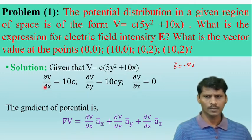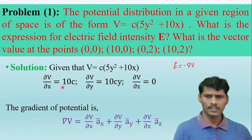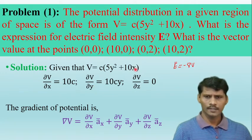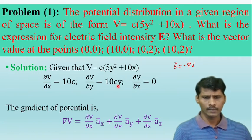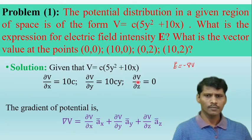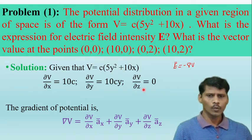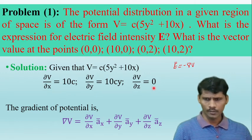Next, differentiating V with respect to y, with x as a constant: the derivative of y² is 2y, so 5·2y = 10y, giving ∂V/∂y = 10cy. Since there is no z parameter in the given potential, differentiating with respect to z gives ∂V/∂z = 0.